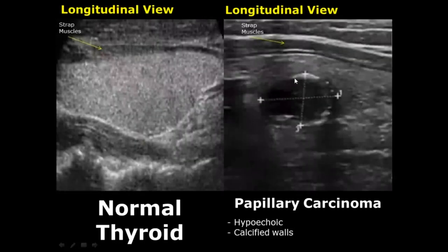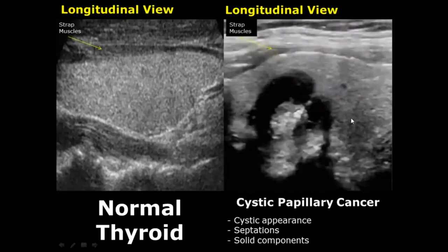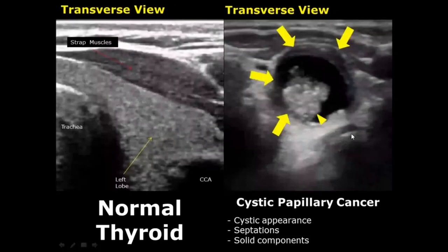Here is another image of papillary carcinoma — a hypoechoic lesion with calcified hyperechoic walls. Papillary cancer can also have a cystic form, in which you will see cystic components, septations, and solid components. Here is a transverse view showing cystic papillary cancer: a cystic mass with solid components.